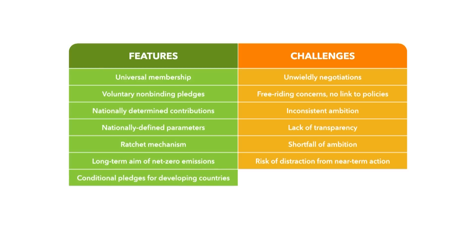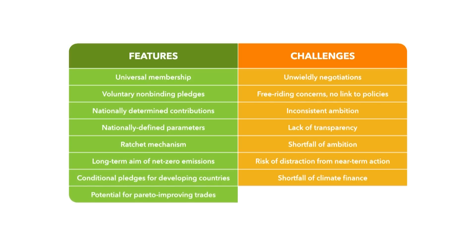Conditional pledges are an important way for Paris to raise mitigation ambition in developing countries, but they depend on climate finance actually coming through. Any economist will see the potential for beneficial trading in greenhouse gas emissions. If the marginal cost to abate a ton of CO2 is lower in a developing country than a developed one, it seems a no-brainer for the developed country or firms in that country to pay for the reduction to be done in the developing country. Such schemes are often called offsets or voluntary carbon credits. This Pareto-improving trade is what Article 6 of the Paris Agreement seeks to exploit. However, it's hard to ensure that emissions reductions in the developing country are really additional to what would have happened otherwise, so there's a risk that the advanced country reduces its abatement without getting the corresponding higher abatement abroad.